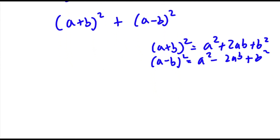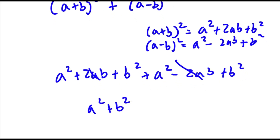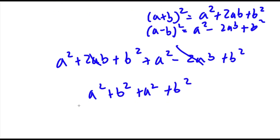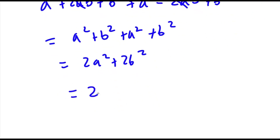So if I add these two together, I get a squared plus 2ab plus b squared plus a squared minus 2ab plus b squared. The 2ab terms cancel out, and I'm left with a squared plus b squared plus a squared plus b squared, which is equal to 2a squared plus 2b squared. And if I factor out 2, I get 2 times (a squared plus b squared).